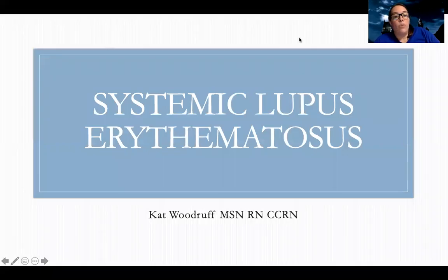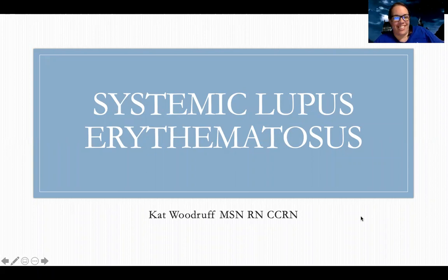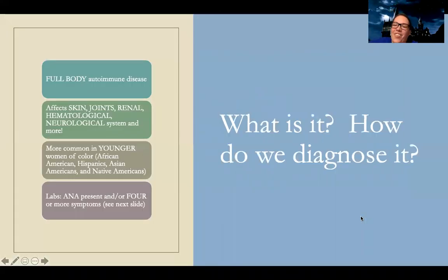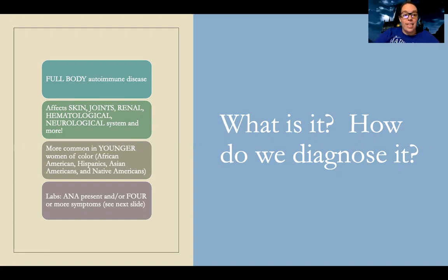Next is systemic lupus erythematosus — we call it SLE. SLE, or lupus for short, is a full-body autoimmune disease. Out of all the diseases we've talked about, this is a true autoimmune disease. It affects the entire body: skin, joints, renal, hematologically, neurological, cardiovascular, and so much more.